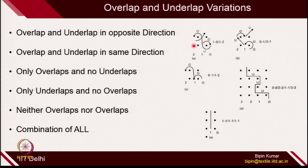When overlap and underlap are in opposite directions, you produce a closed loop structure, which is more stable. When they are in the same direction, you produce an open loop construction where the loop is highly unstable and distorted. There are other possibilities: only overlaps and no underlaps; only underlaps and no overlaps; or neither overlaps nor underlaps, where the yarn moves in a straight fashion and loops cannot be generated.